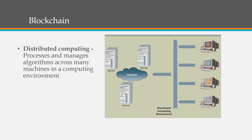Another concept we look at this week is blockchain. Blockchain is an emerging technology being used for a variety of different business purposes. It started out as cryptocurrency — a finance technology — but we're now looking at how it can support supply chain, marketing, and other elements of business. Blockchain is a distributed computing technology that processes and manages algorithms across many machines in a computing environment. It allows a decentralized format, collecting information from a variety of sources and distributing it in a unified fashion. I encourage you to read further on this in the course material provided this week.